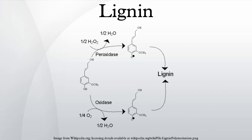Lignin biosynthesis begins in the cytosol with the synthesis of glycosylated monolignols from the amino acid phenylalanine. These first reactions are shared with the phenylpropanoid pathway. The attached glucose renders them water-soluble and less toxic. Once transported through the cell membrane to the apoplast, the glucose is removed and polymerization commences. Much about its anabolism is not understood even after more than a century of study. The polymerization step, i.e. a radical-radical coupling, is catalyzed by oxidative enzymes. Both peroxidase and laccase enzymes are present in the plant cell walls, and it is not known whether one or both of these groups participates in the polymerization. Low molecular weight oxidants might also be involved.